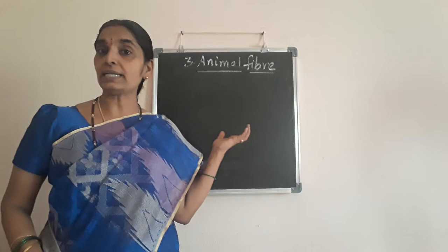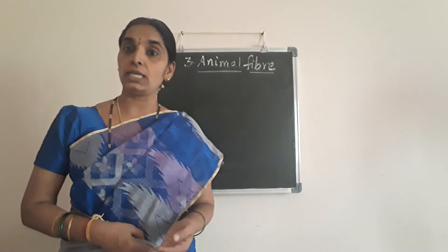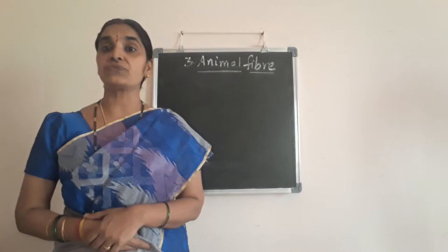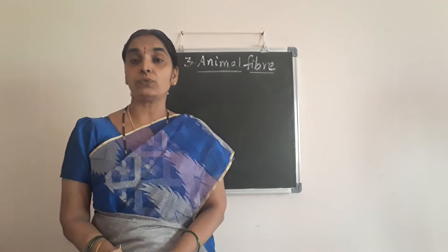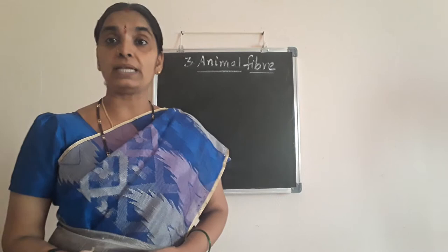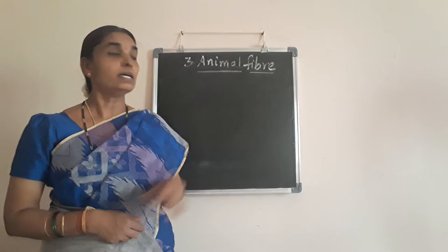We get silk from the silkworm. We get wool from sheep, goat, yak, camel, llama, etc. Today's topic is about silk — how silk is manufactured, where we get silk from, and the different places where silk industries are developed in our state, which is covered in this animal fiber lesson.